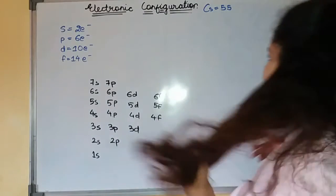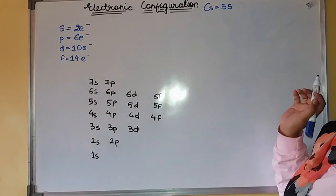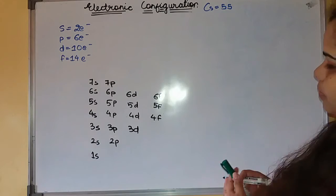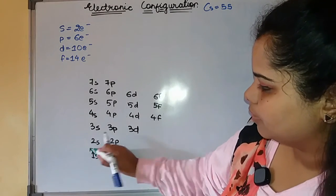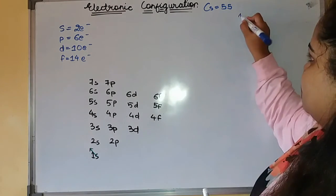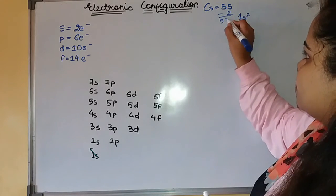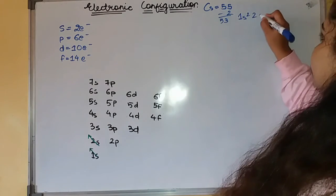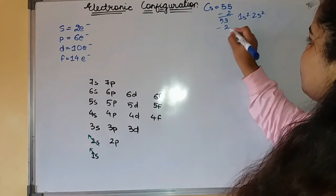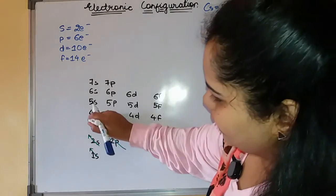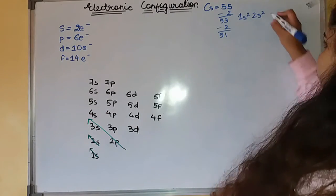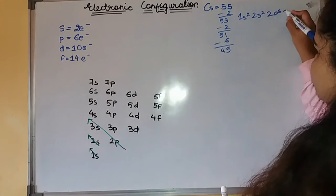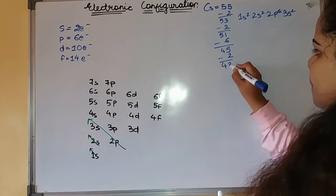Now we are taking a very big number containing element, cesium. It has atomic number 55. Again, start with filling up 1s. I will write down 1s². Then 2s. 2p and 3s.